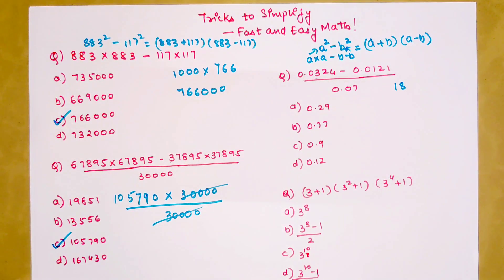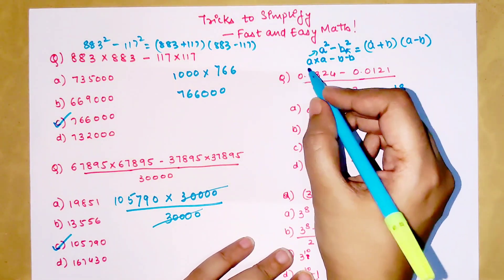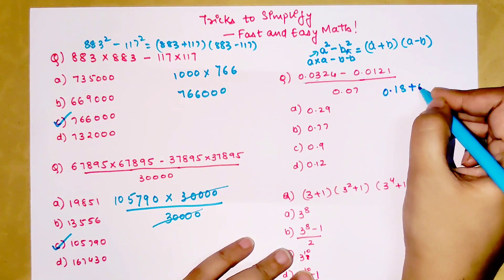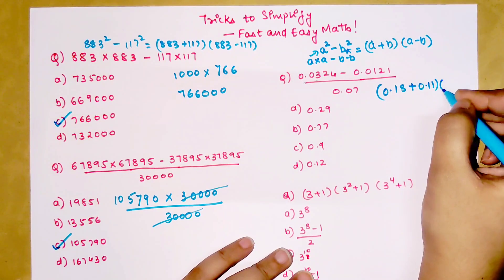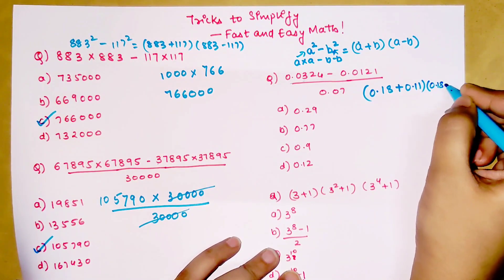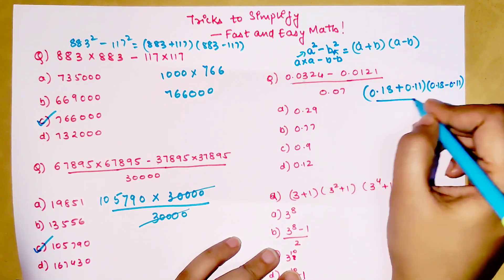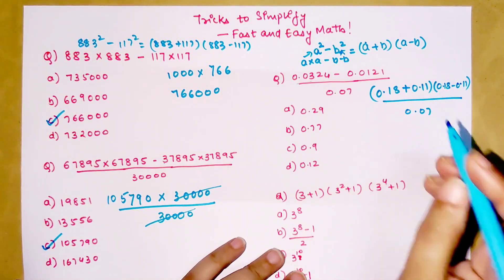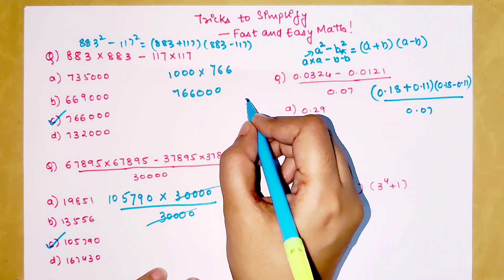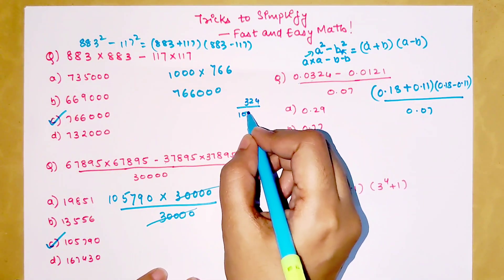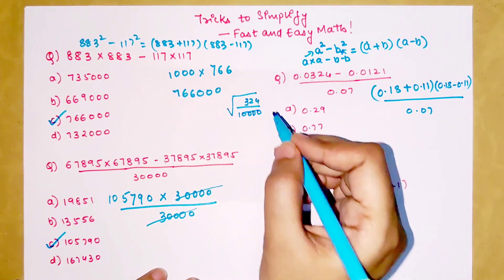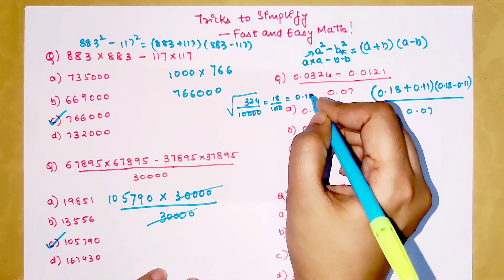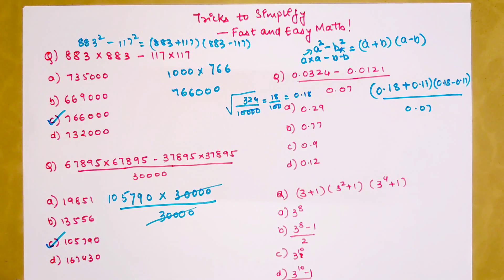The problem is we have a decimal in the picture. So when I take square root of this I am actually getting 0.18, and that will get added to 0.11. Similarly, 0.18 - 0.11, the whole thing will get divided by 0.07. This is nothing but 324 upon 10,000, so when I take a square root this gets me 18 upon 100, which is 0.18.